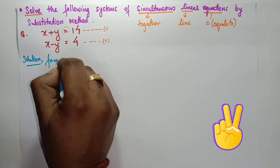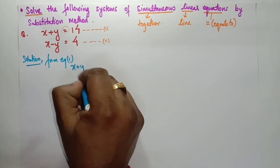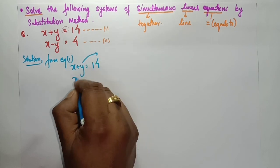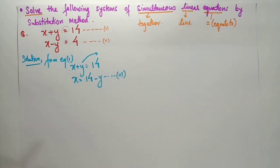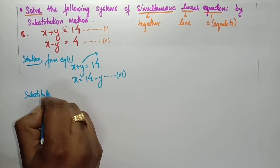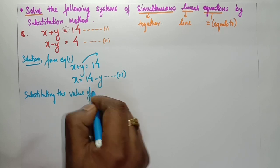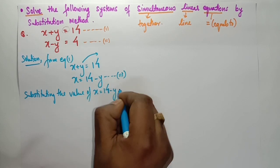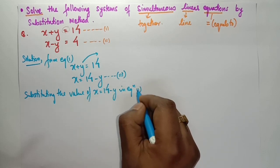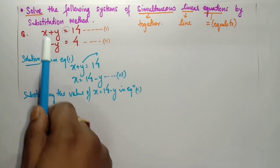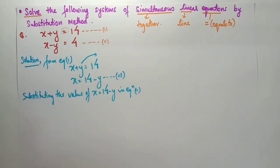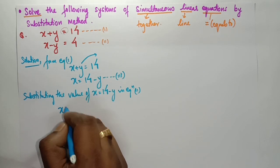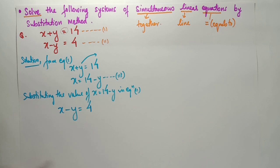From equation one — x plus y equals to 14 — I take y to the other side: x equals to 14 minus y. I write this as equation three. Now I will substitute the value of x equals to 14 minus y into equation two. The rule is: you find the value from equation one, but you must put it into the other equation — equation two.